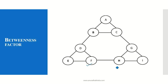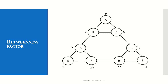For node F and node H, the betweenness factor calculated comes out to be 6.5 each. Summary of betweenness factors: A = 0, E = 0, I = 0; H = 6.5, F = 6.5; D and G (at the same level) = 7; B and C (at the same level) = 6.